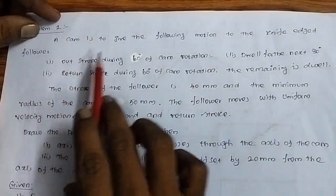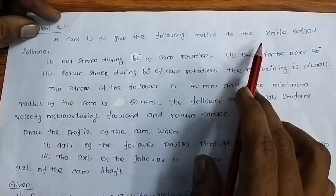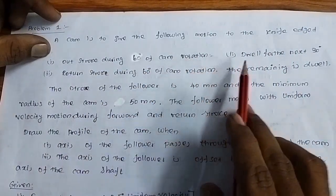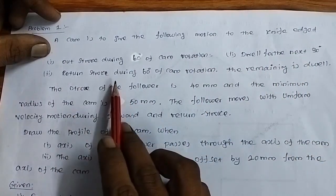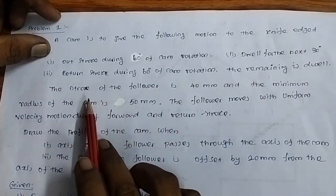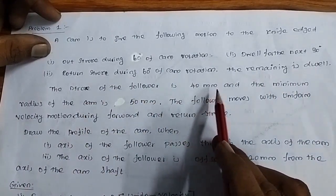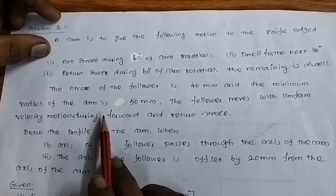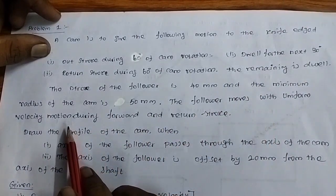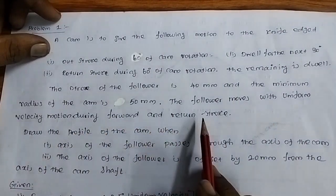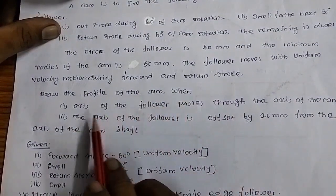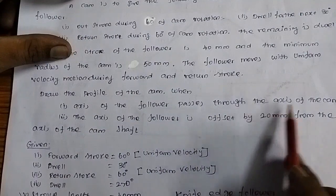Problem 1: A cam is to give the following motion to the knife edge follower. Outstroke during 60 degrees of cam rotation, dwell for the next 30 degrees, return stroke during 60 degrees of cam rotation, and the remaining 210 degrees is dwell. The stroke of the follower is 40 mm and the minimum radius of the cam is 50 mm. The follower moves with uniform velocity motion during forward and return stroke. Draw the profile of the cam when the axis of the follower passes through the axis of the cam.